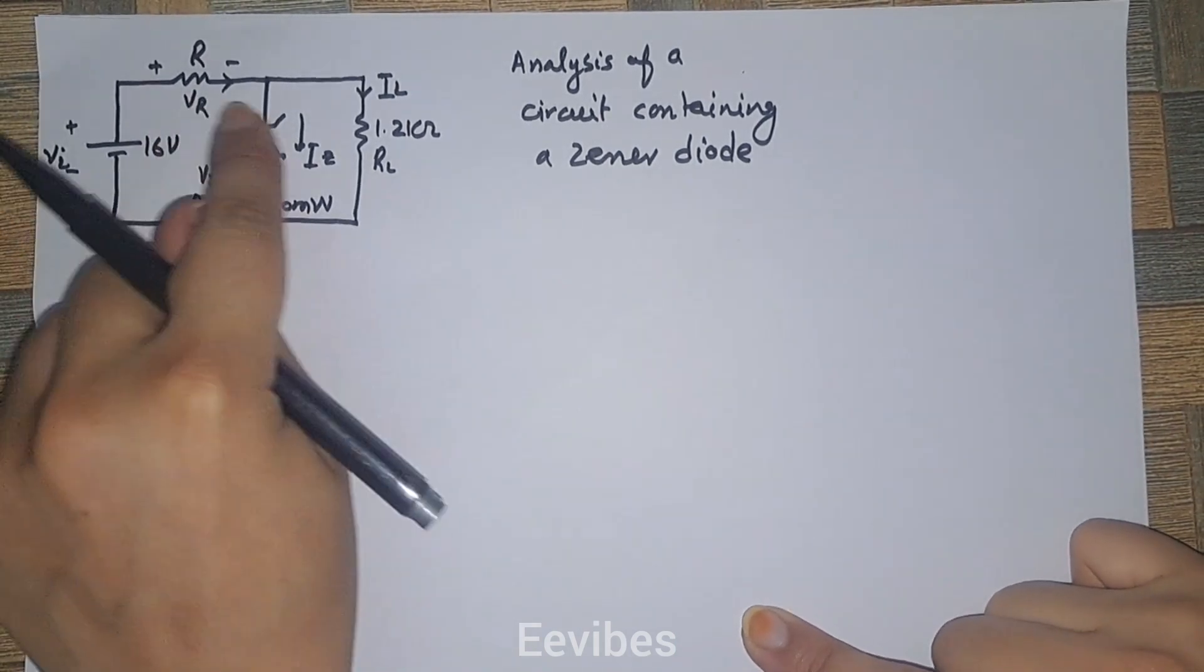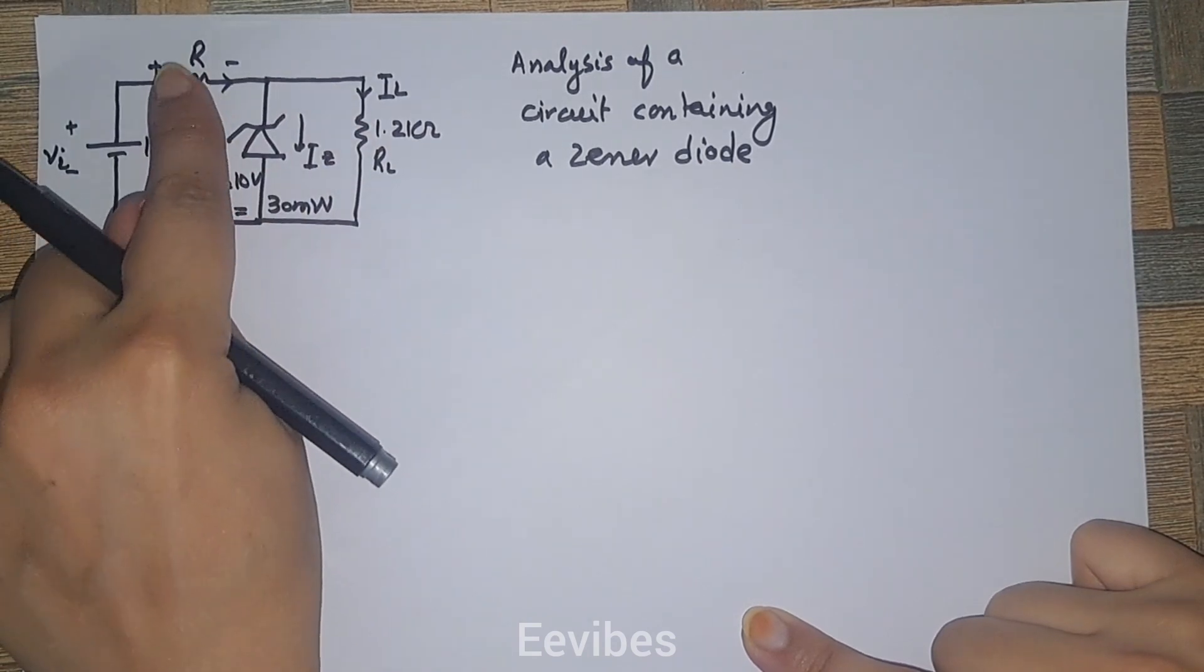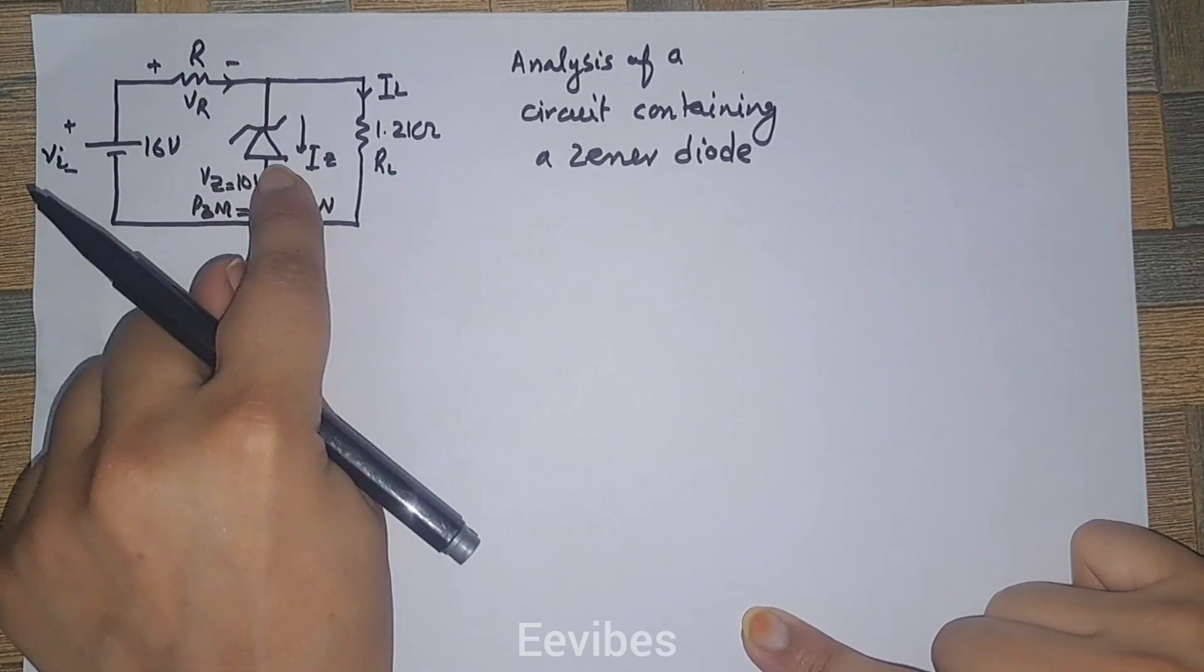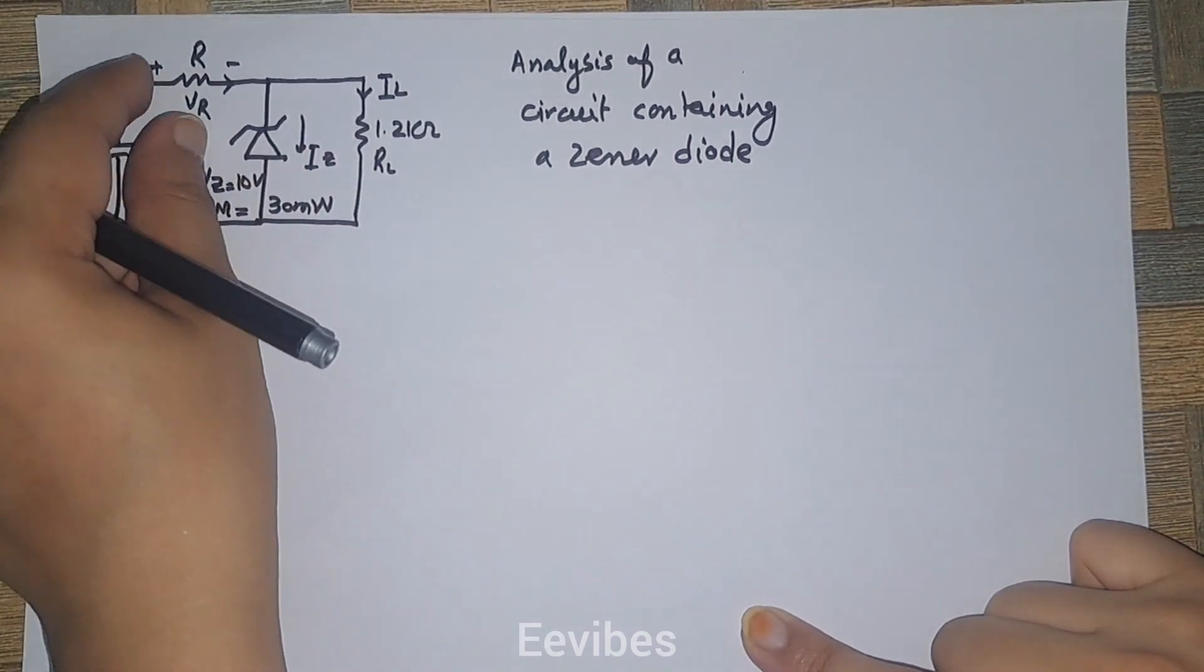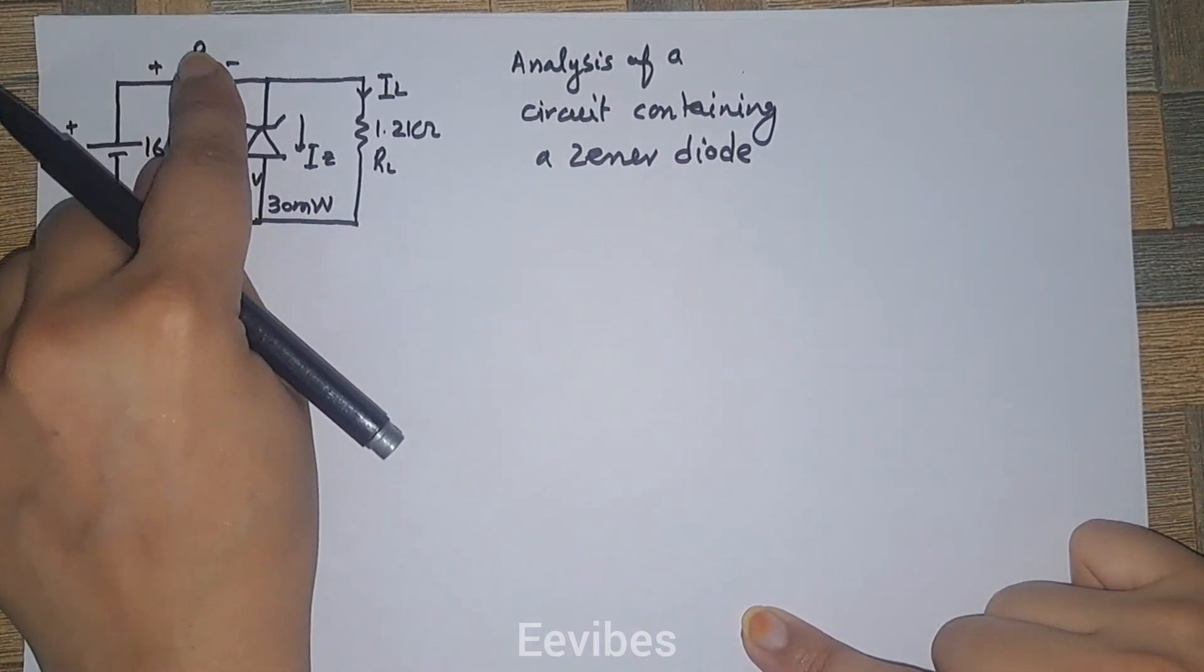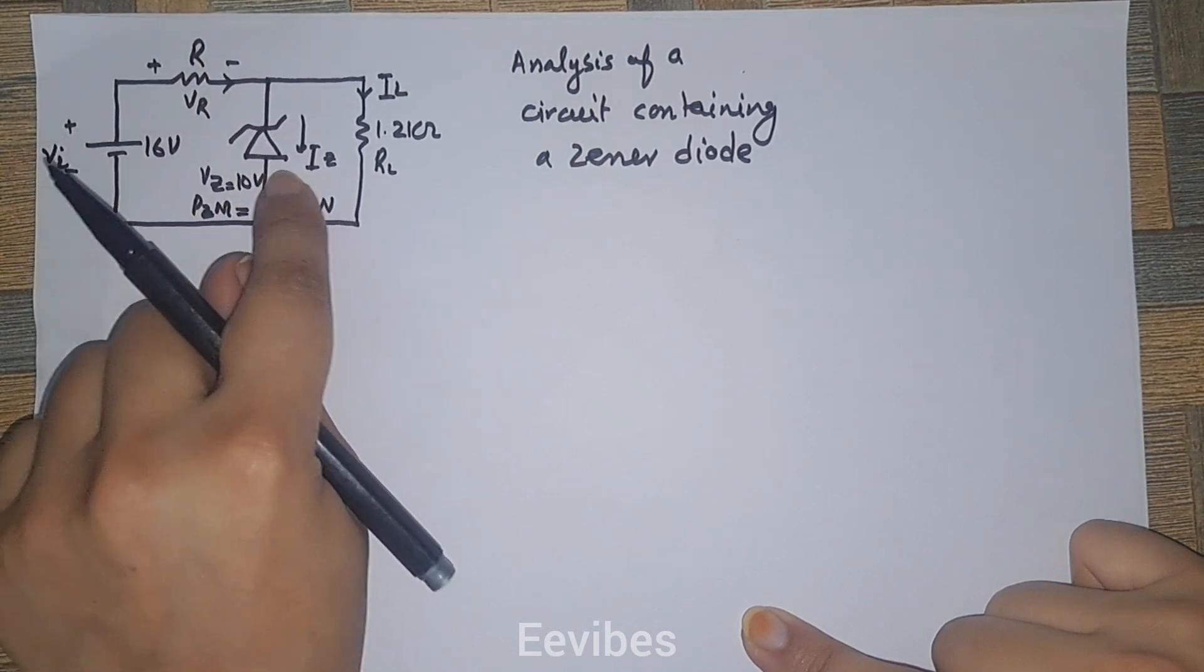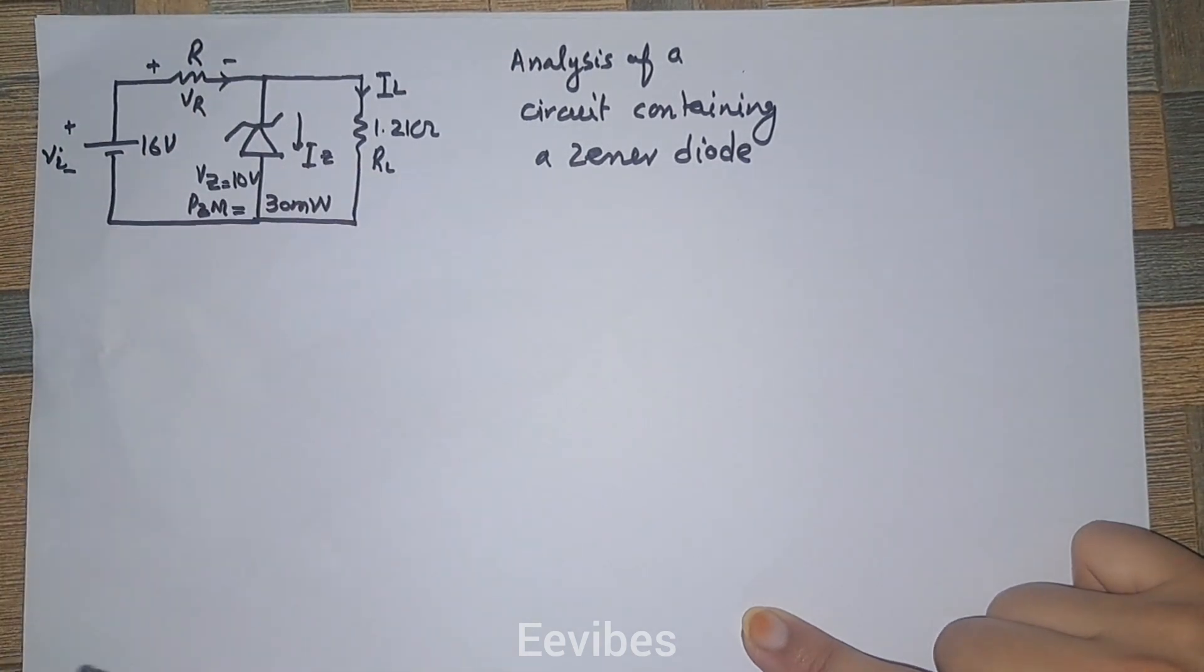This includes the current limiting resistor, zener diode, and the load. Similarly, we want to know the voltages developed across the resistor, across the zener, and across the load RL.